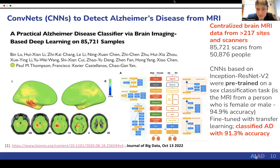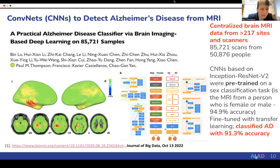We just published on October 13th one of the largest brain imaging studies ever that used deep learning to identify whether a person had Alzheimer's disease on the basis of a raw MRI scan. This method learned from data from 50,000 people from 217 scanners. It was pre-trained to classify whether a person was female or male, and then fine-tuned to make the decision about Alzheimer's disease, which it made in independent data with 91% accuracy.